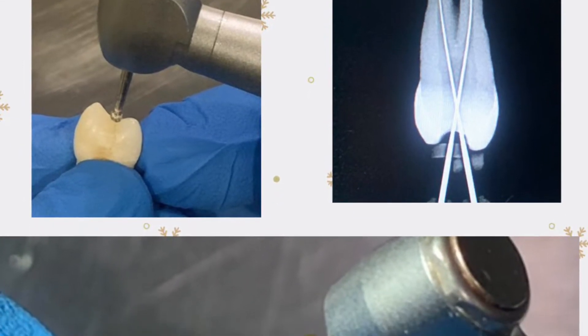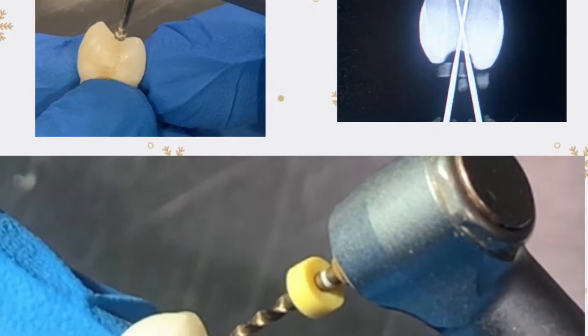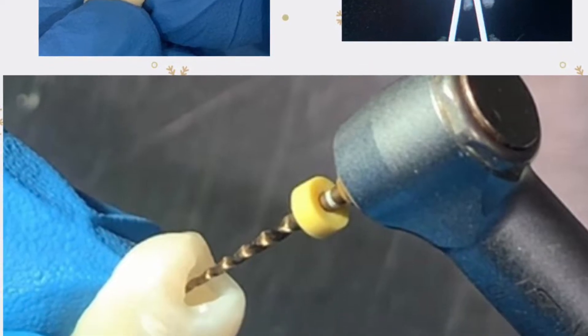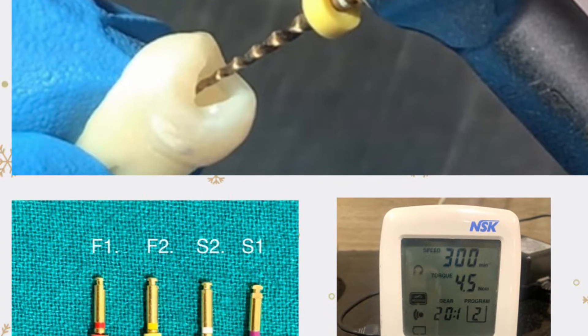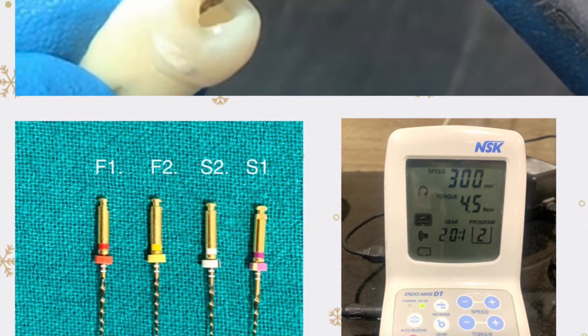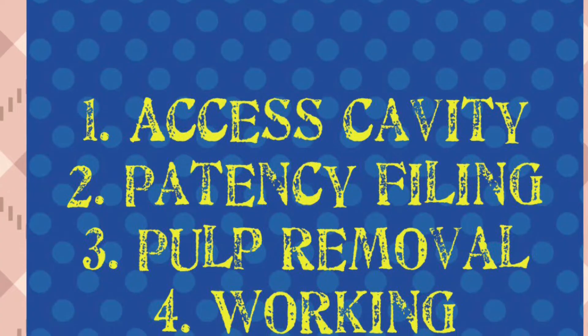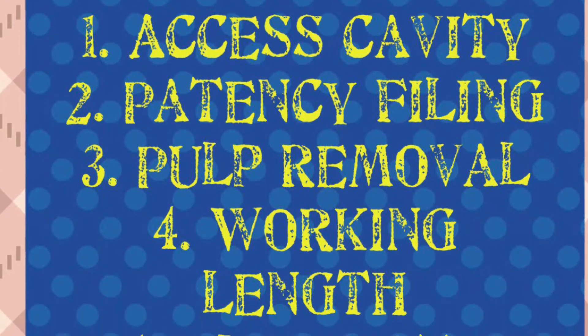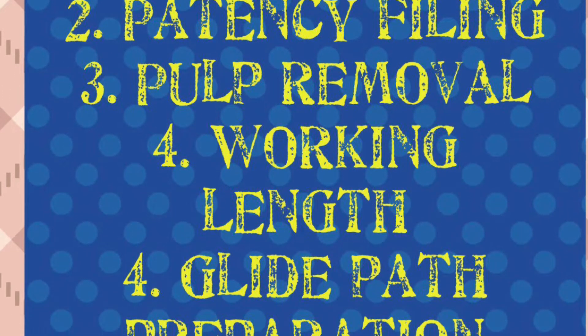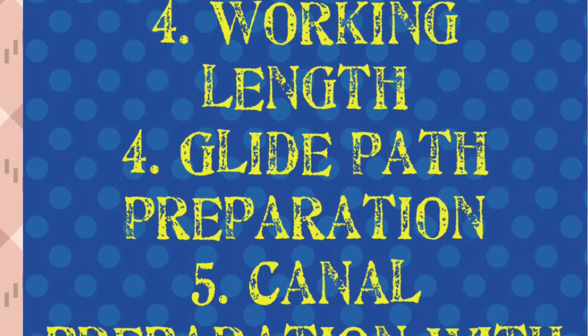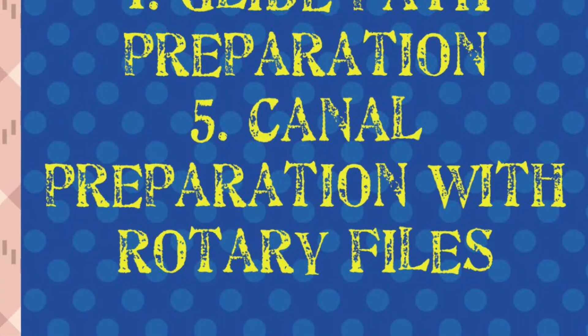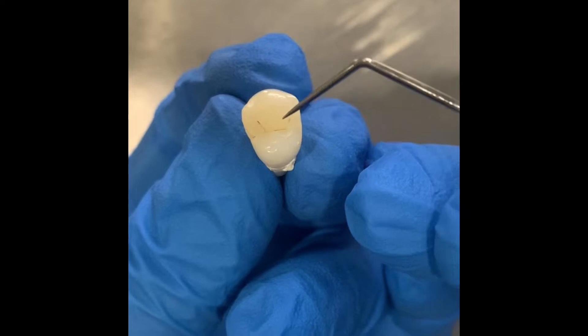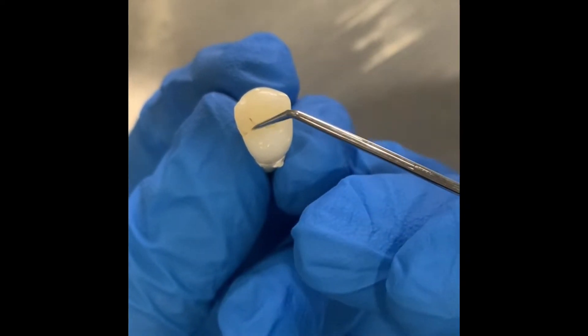Hello everybody, in this video I've discussed the step-by-step procedure of doing root canal preparation with rotary files on a maxillary first premolar. Let's go ahead and watch the various steps: access cavity preparation, patency filing, pulp removal, working length determination, glide path preparation, and finally canal preparation with rotary files.